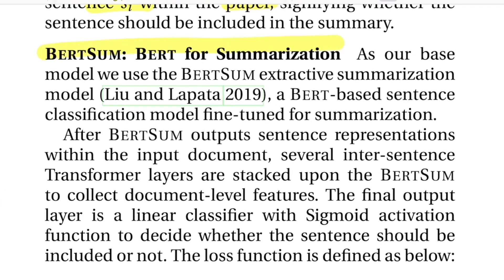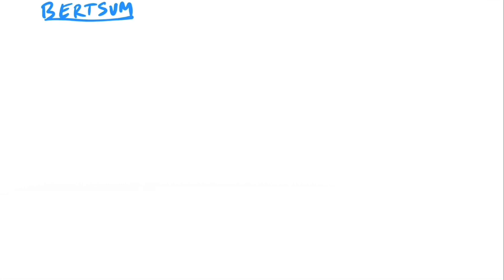They use prior work called BERTSum for this purpose — a BERT-based sentence classification model tuned for summarization, which they build on top of. The actual BERTSum paper is titled 'Fine-tune BERT for Extractive Summarization,' from the University of Edinburgh. At a high level, every sentence from paper P is passed through BERT, which outputs whether the sentence should be 0 or 1 — where 1 means it should be selected as part of the extractive summary and 0 means it should be rejected.